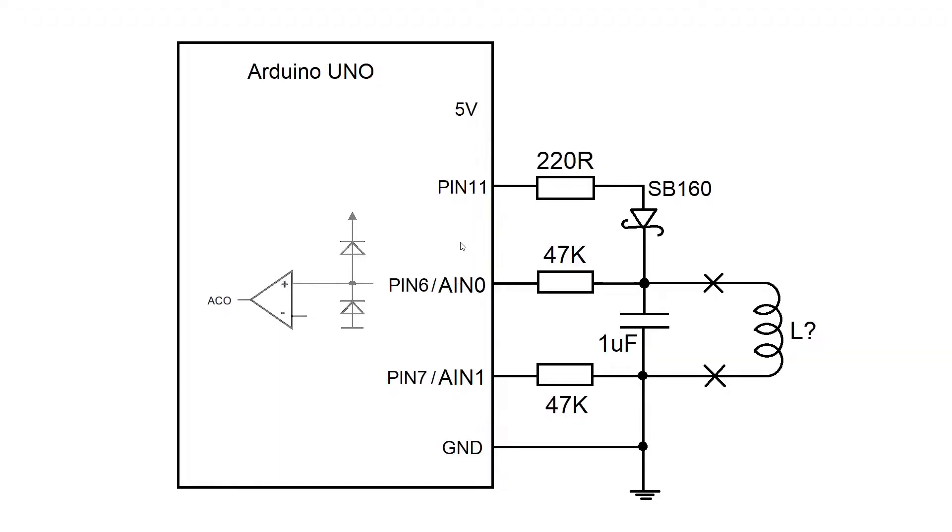So this is the schematic for our inductivity meter. If we let the current flow through the inductor and then turn off that current, this tank circuit will freely oscillate.